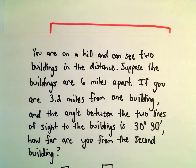If you're 3.2 miles from one building, and the angle between the two lines of sight to these buildings is 30 degrees 30 minutes, we want to know how far you are from the second building.